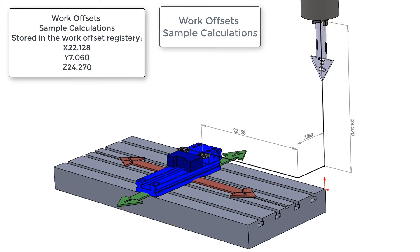In the part shown here, the distance from the machine home to the part zero is 22.128 inches in the x-axis, 7.060 in the y-axis, and 24.270 in the z-axis.